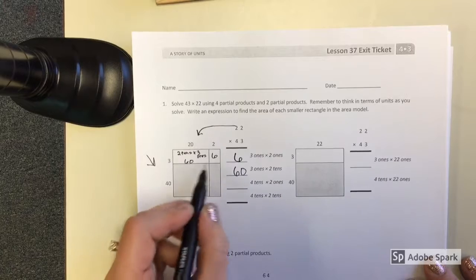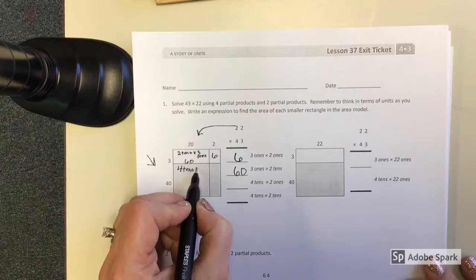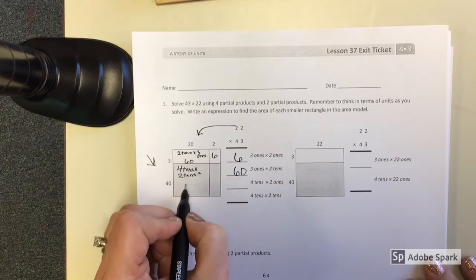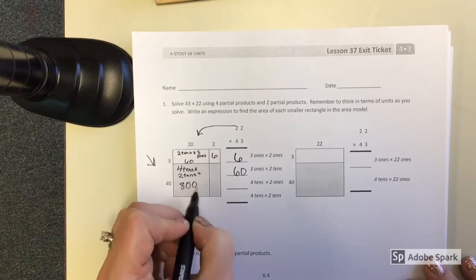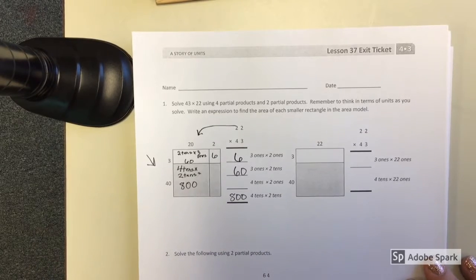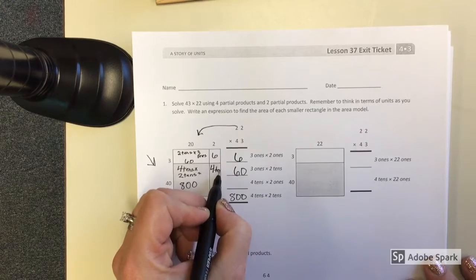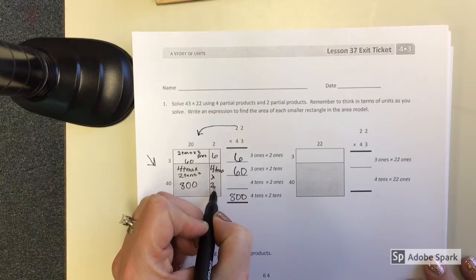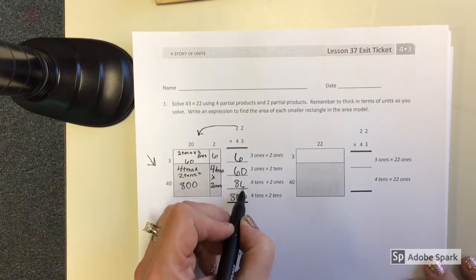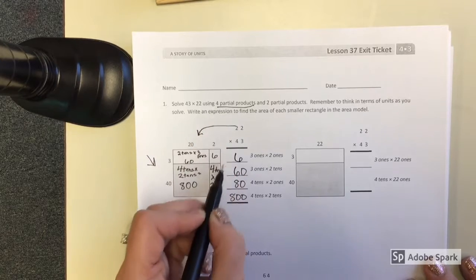And then I'm thinking 4 tens times 2 tens. That's going to get me 800. And then I'm thinking 4 tens times 2 ones. And that of course is going to get me 80. So here are my 4 partial products.